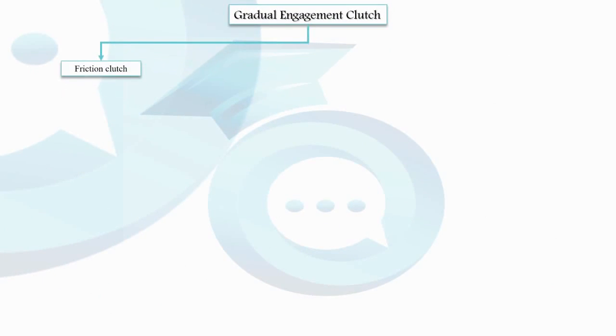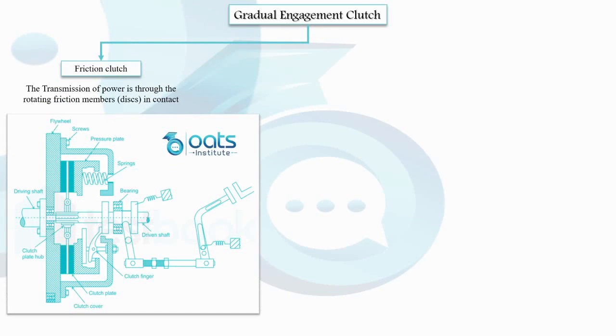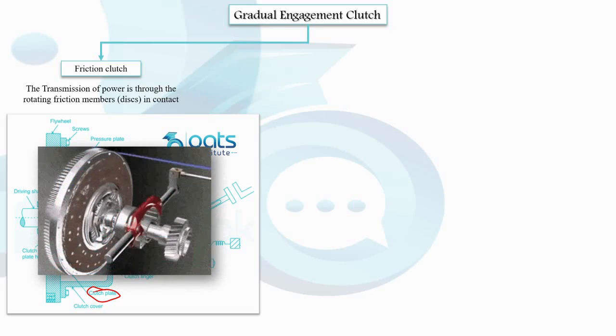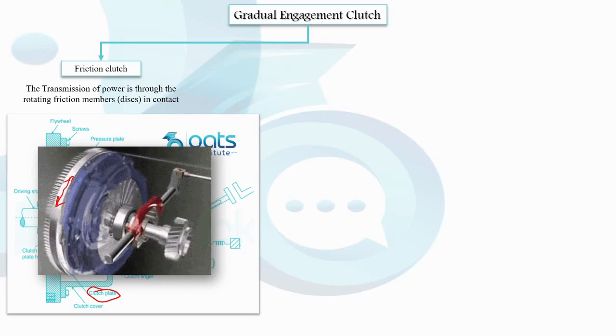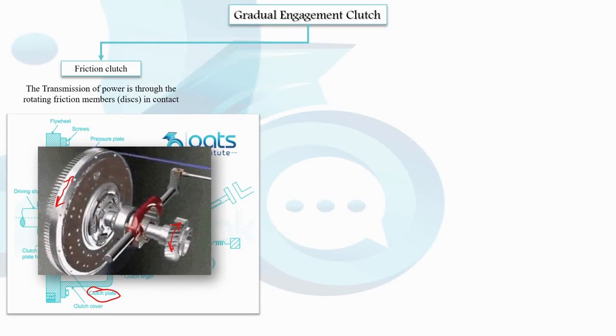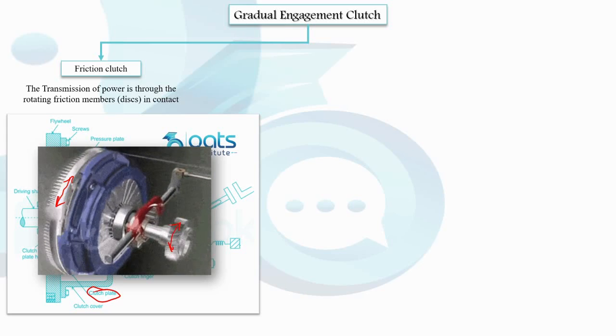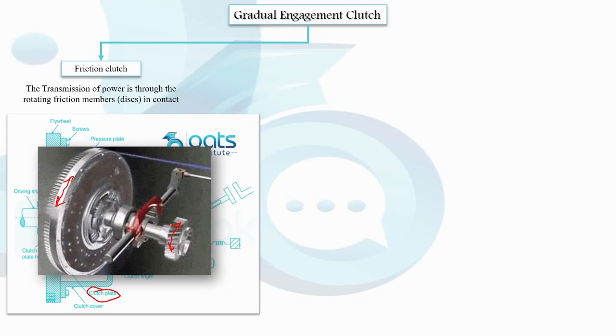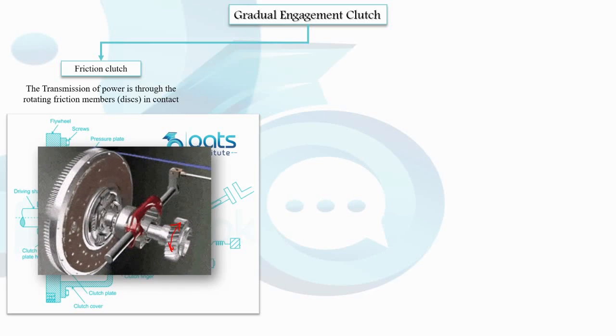Let's start with the friction clutch. As the name suggests, the transmission of power in this clutch occurs through rotating friction members, typically discs. When the driving and driven members come into contact, a friction force begins acting between them, causing the driven member to move along with the driving member. Initially, the force pressing the two members together is small, and the friction force may not be sufficient to drive the driven member at the same speed as the driving member. However, as the pressing force increases, the friction force overcomes the resistance and the driven member gradually starts rotating at the same speed as the driving member.